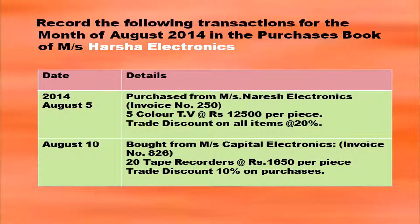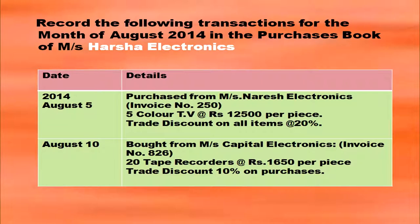Record the following transactions for the month of August 2014 in the purchase book of Messrs. Harsha Electronics. On August 5th, purchase from Messrs. Naresh Electronics: 5 color TVs at rupees 12,500 per piece, trade discount on all items at 20 percent. On August 10th, bought from Messrs. Capital Electronics: 20 tape recorders at rupees 1,650 per piece with trade discount on purchase.